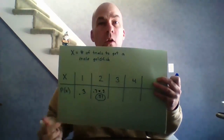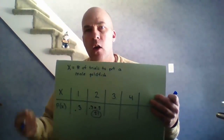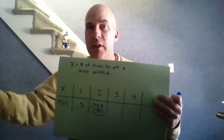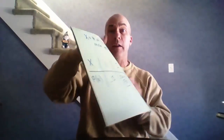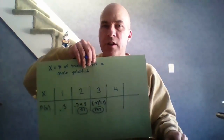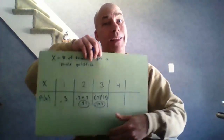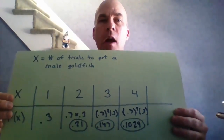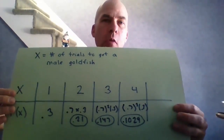What's the probability it takes two trials? I'd need to fail the first time and succeed the second: 0.7 × 0.3 = 0.21. What about three trials? I'd need to fail the first two and succeed the third: 0.7 × 0.7 × 0.3, which is 0.7 squared times 0.3 = 0.147. Notice these numbers are getting smaller and smaller — for four trials it's 0.7 cubed times 0.3 = 0.1029.